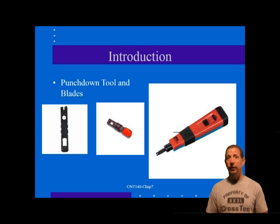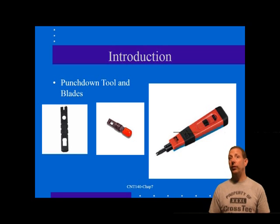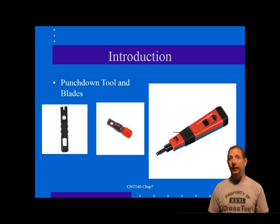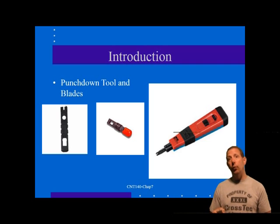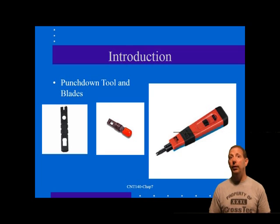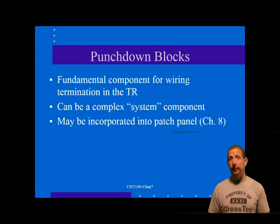In higher category cabling systems, it is very common to terminate horizontal cables directly into a patch panel. However, the termination blocks used will very likely be a variation of the 110 style connecting block described in this lesson. We will also cover some of the mounting location issues of the TR, including the options for locating hub equipment.